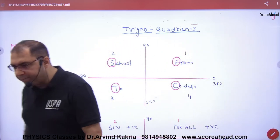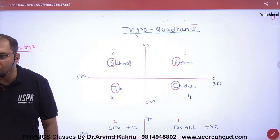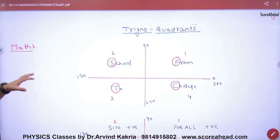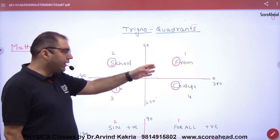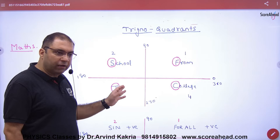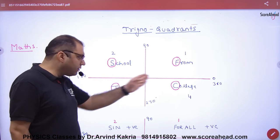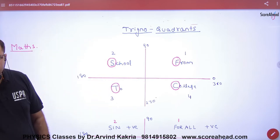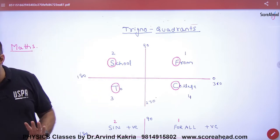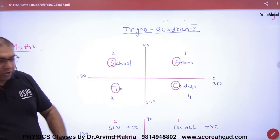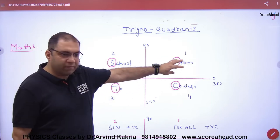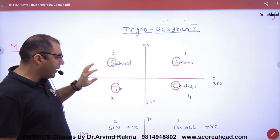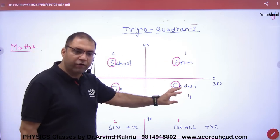In trigonometry coordinates, we draw two perpendicular lines and divide them into 4 parts. This gives us coordinate number 1, 2, 3, and 4.